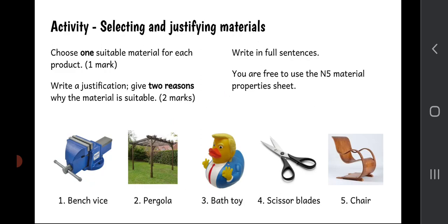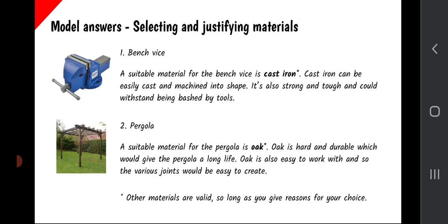For example, looking at a bench vice: a suitable material is cast iron. Cast iron can be easily cast and machined into shape; it's also strong and tough and could withstand being bashed by tools. Note that you could have chosen something other than cast iron, but you must give good reasons. Notice how the answer is specifically about the vice and its use — mentioning that it will be bashed by tools relates directly to the object in the photograph.